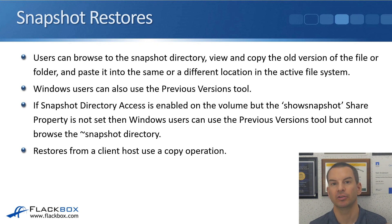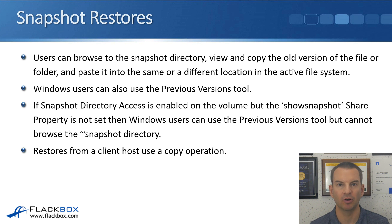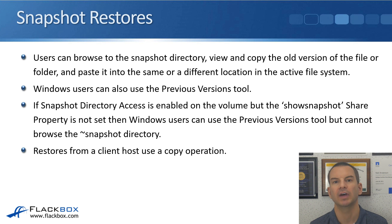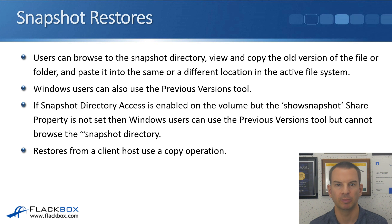Users can browse to the snapshot directory if you've enabled this. They can view and copy the old version of a file or folder, and paste it into the same or a different location in the active file system. For example, if a user has made edits they're not happy with and wants to roll back to a previous version, they can restore an older snapshot directly on top of the current version of the file, overwriting it and returning to the old information.